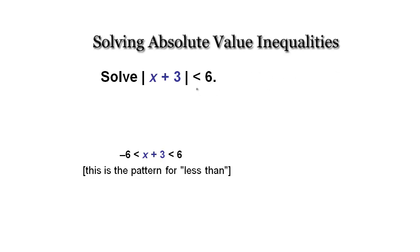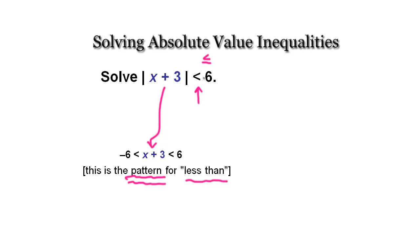So whenever you see this less than — and this also works for less than or equal to — we can actually write this as a compound inequality. This is the pattern you want to use when you see the less than or less than or equal to symbol. You're going to rewrite it as a compound inequality where x plus 3 goes right in the middle, and it's greater than negative 6 and less than positive 6.